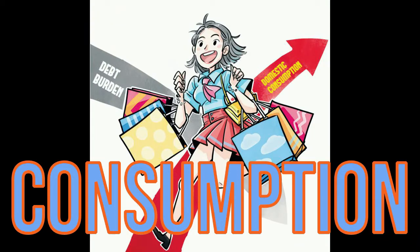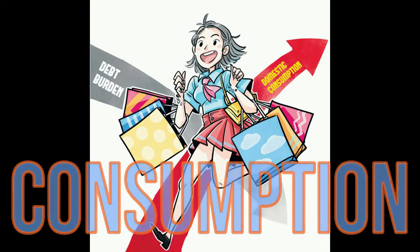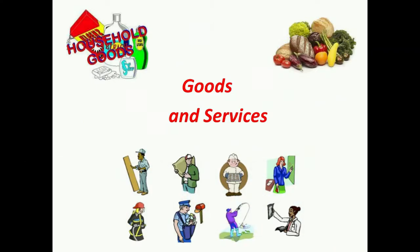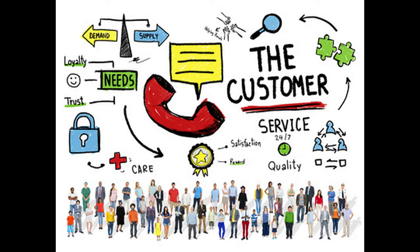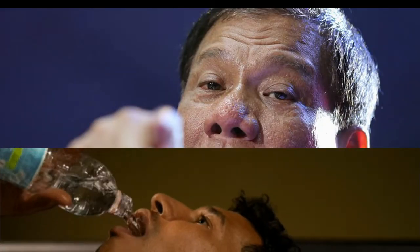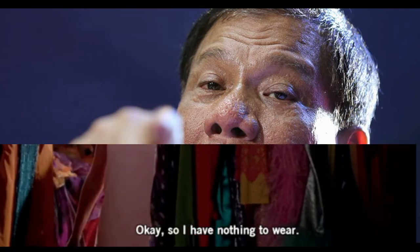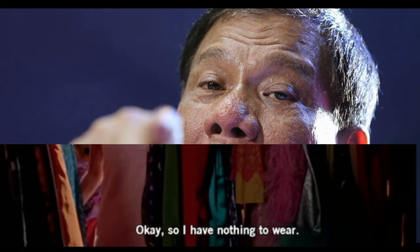What is consumption? Consumption is defined as the use of goods and services by households. It also refers to the use of goods and services by consumers in order to address their wants. For example, you may drink to quench your thirst and wear clothes to protect yourself from extreme temperatures.